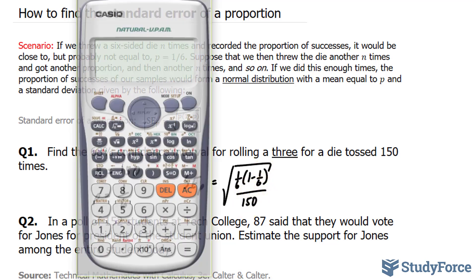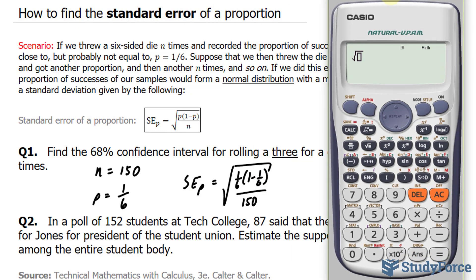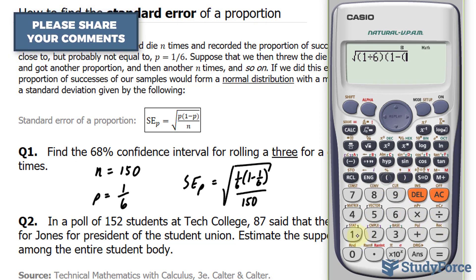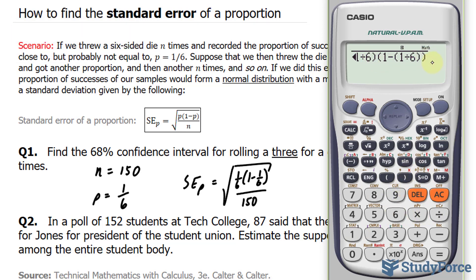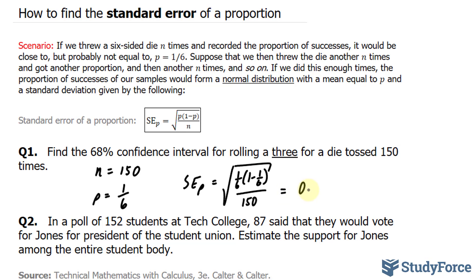Let's use our calculator. Notice how careful I am with my brackets. Make sure you do the same. Divided by 150 gives me the following standard error: 0.0304.